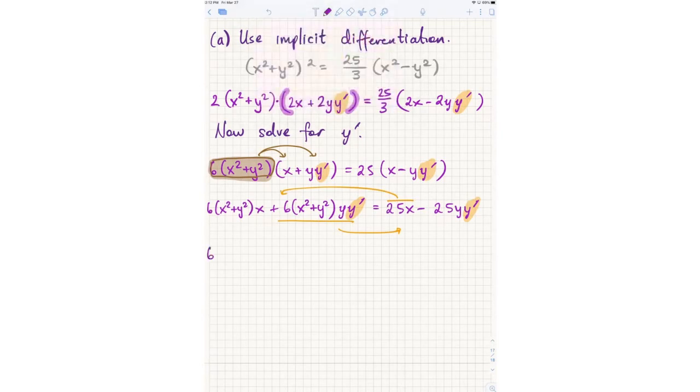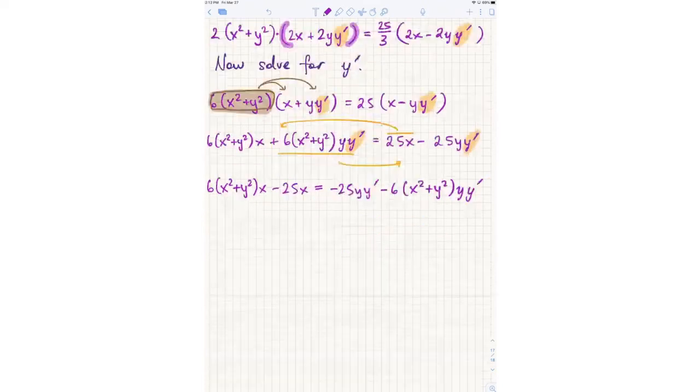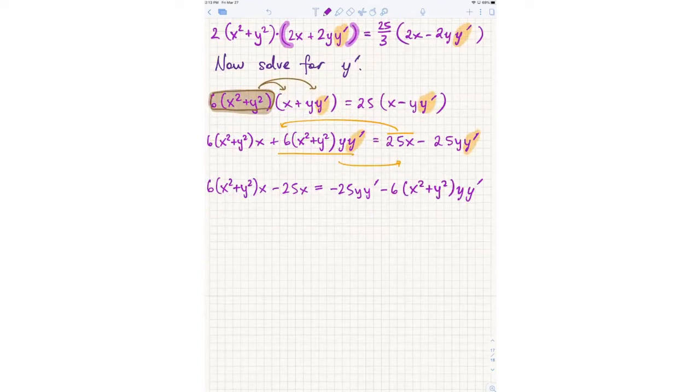So I get here 6(x²+y²)x - 25x = -25yy' - 6(x²+y²)yy'. I'm actually going to multiply by negative 1 because I don't like both terms having a negative. So 25x - 6(x²+y²)x. So the right-hand side now just has positive terms.